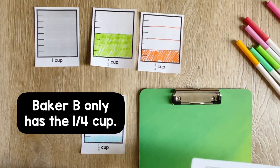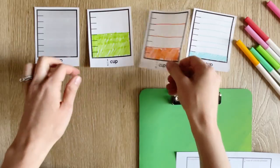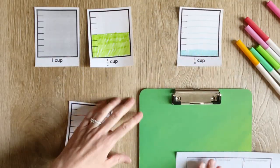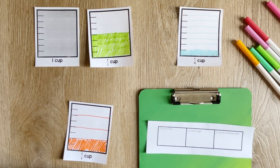Baker B only has the one-fourth cup. So how can the one-fourth cup be used to measure these different amounts? So we'll get our visual ready so we can think about each one.